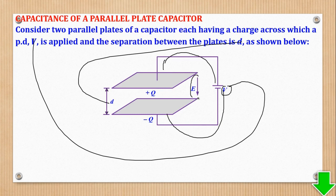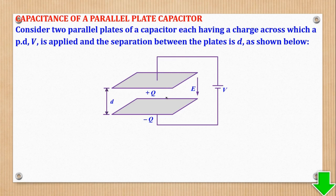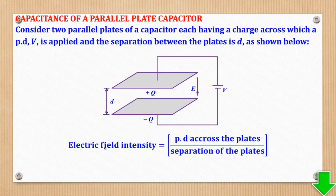So we shall connect it to this PD here, which is V. And because it's connected to a PD V, they will be charged. So this will give this, because of this polarity of this dry cell, it will give this one a positive charge and this one a negative charge. The electric field intensity will be in that direction from positive to negative. So we already saw the relationship between electric field intensity and PD and separation. So you know that electric field intensity is equal to PD across the plates divided by the separation of the plates. That means that E will be equal to V over D. So we shall call it equation 1.